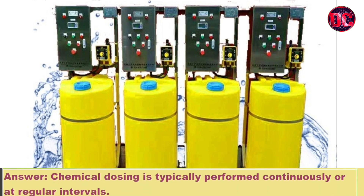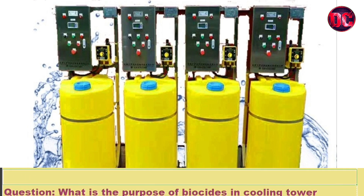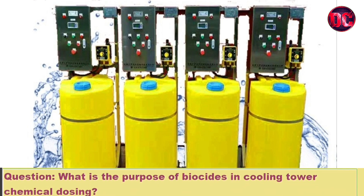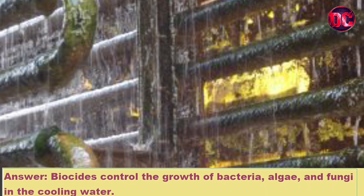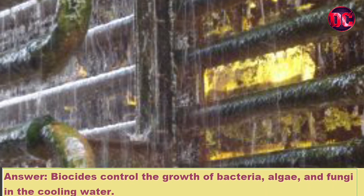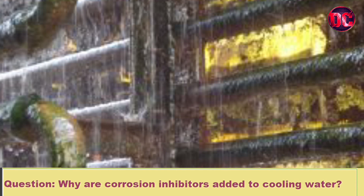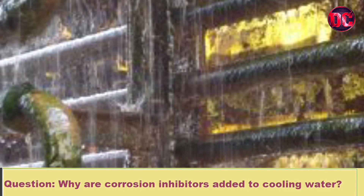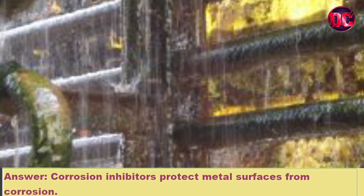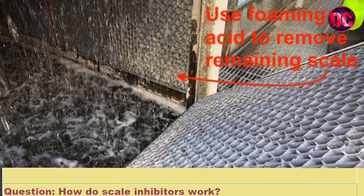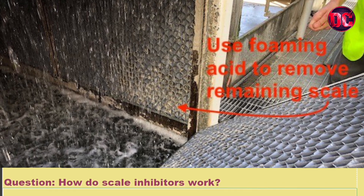Question: What is the purpose of biocides in cooling tower chemical dosing? Answer: Biocides control the growth of bacteria, algae, and fungi in the cooling water. Question: Why are corrosion inhibitors added to cooling water? Answer: Corrosion inhibitors protect metal surfaces from corrosion.